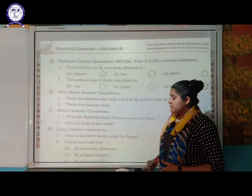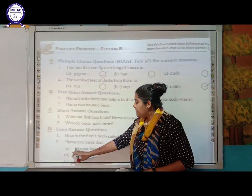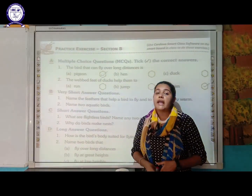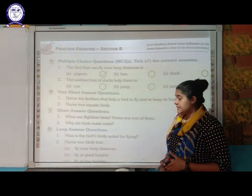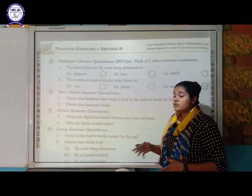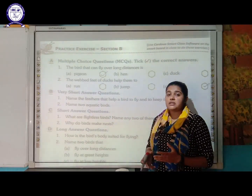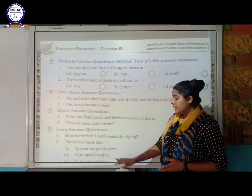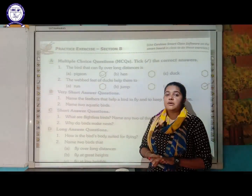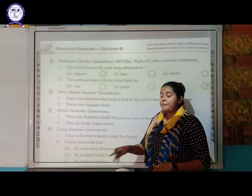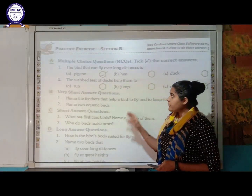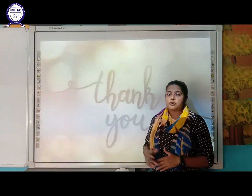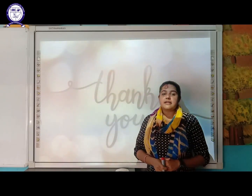Name two birds that fly over a long distance — crane and pigeon. Birds that fly at a great height — vulture and eagle. Birds that fly at a lower height — sparrow and bulbul. With this, we are completing our fifth chapter about birds. Hope to see you in the next video. Take care, thank you.